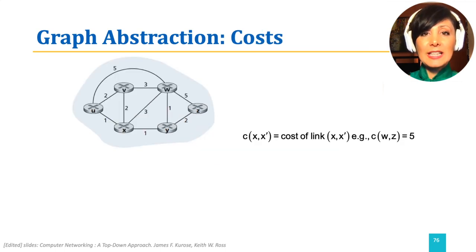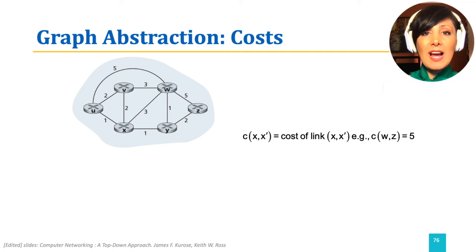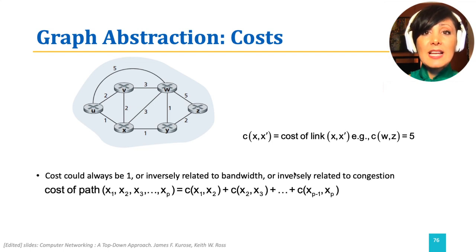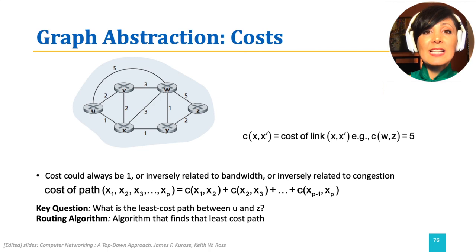In this model, the cost of a link — for example, the cost of a link from node x to node x-prime — is depicted by c(x, x'), which equals a number. For example, in the shown graph, c(w, z) equals 5. This cost could be a constant value, inversely related to bandwidth or congestion, or directly related to the actual monetary costs of using a link. If an edge is not available, this cost could be set to infinity. The cost of a path is the sum of the costs of the links along that path. With this abstraction, the question of routing can be formulated as the least-cost path between two given nodes. A routing algorithm is the algorithm that finds that least-cost path.